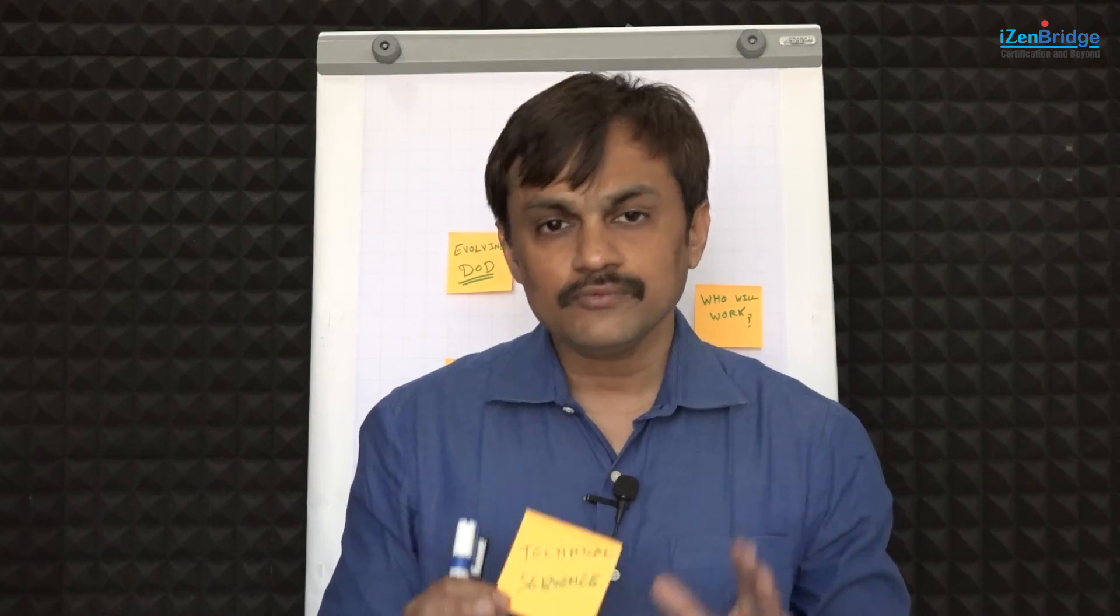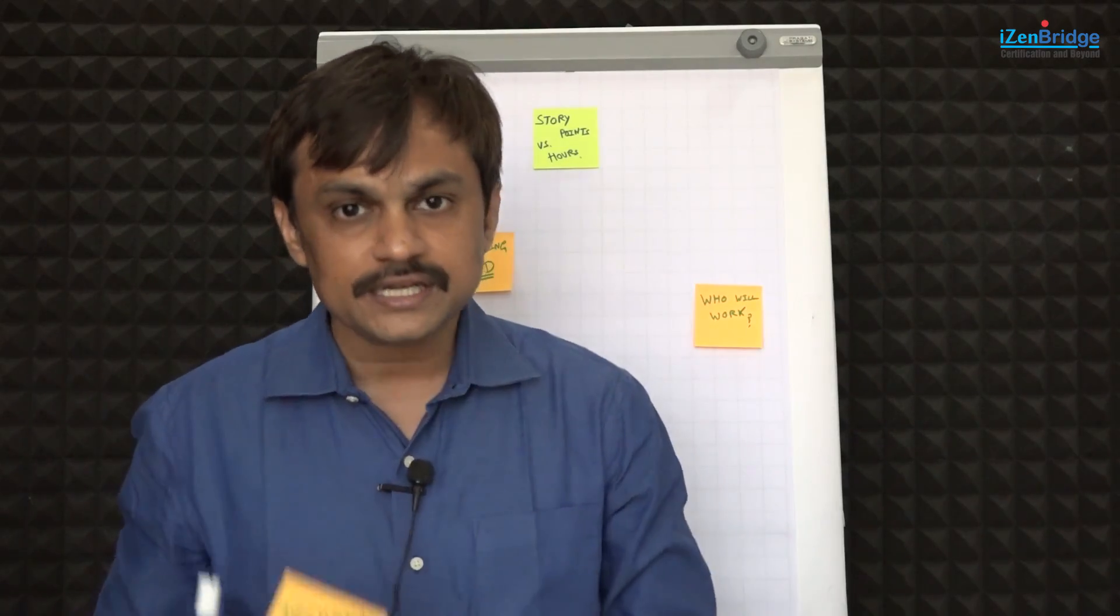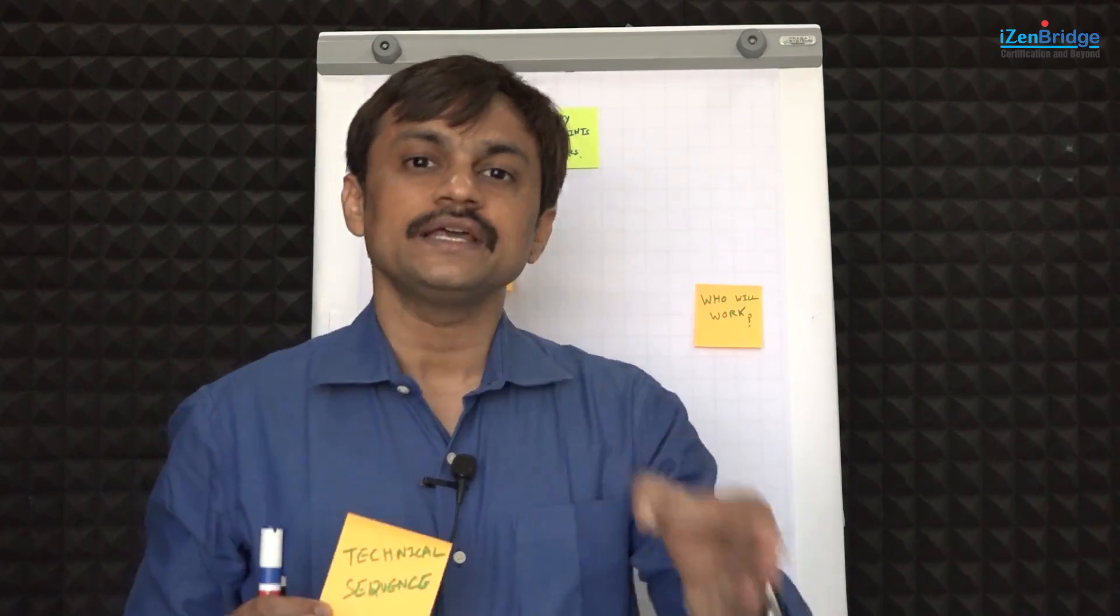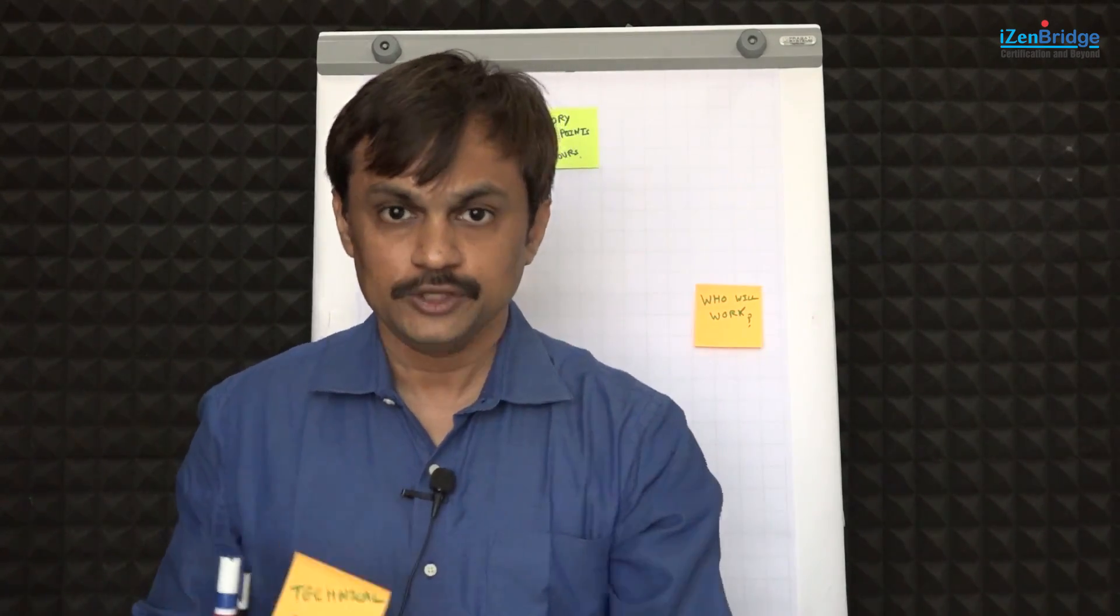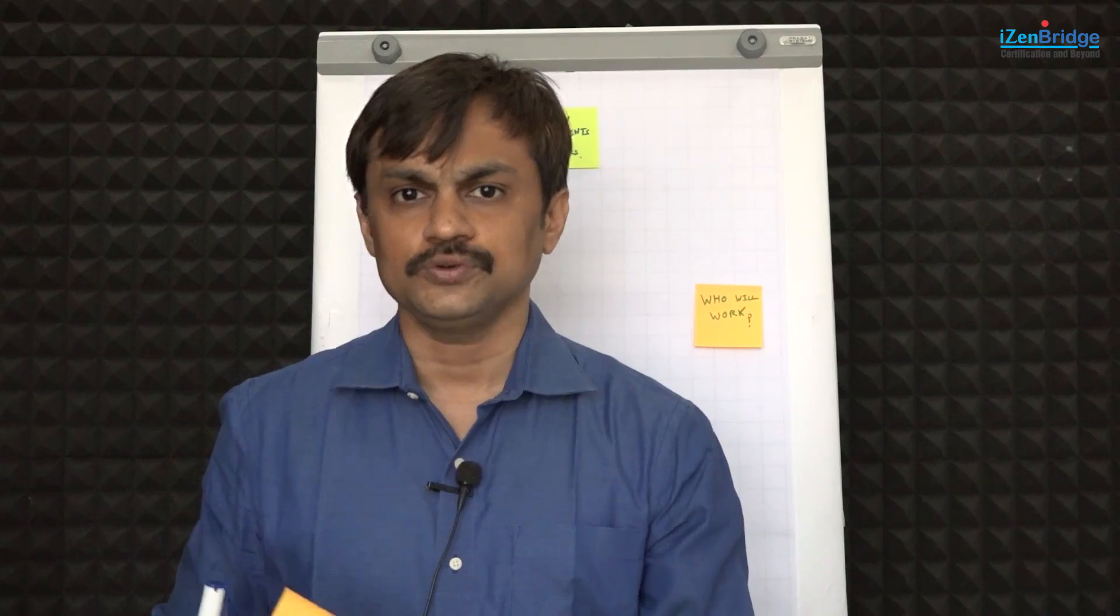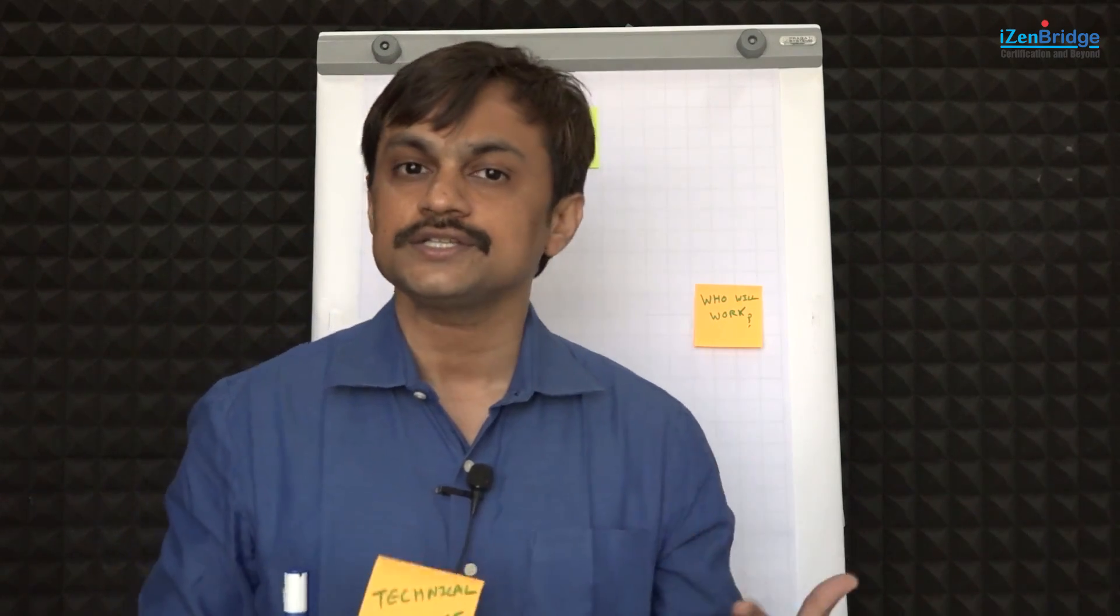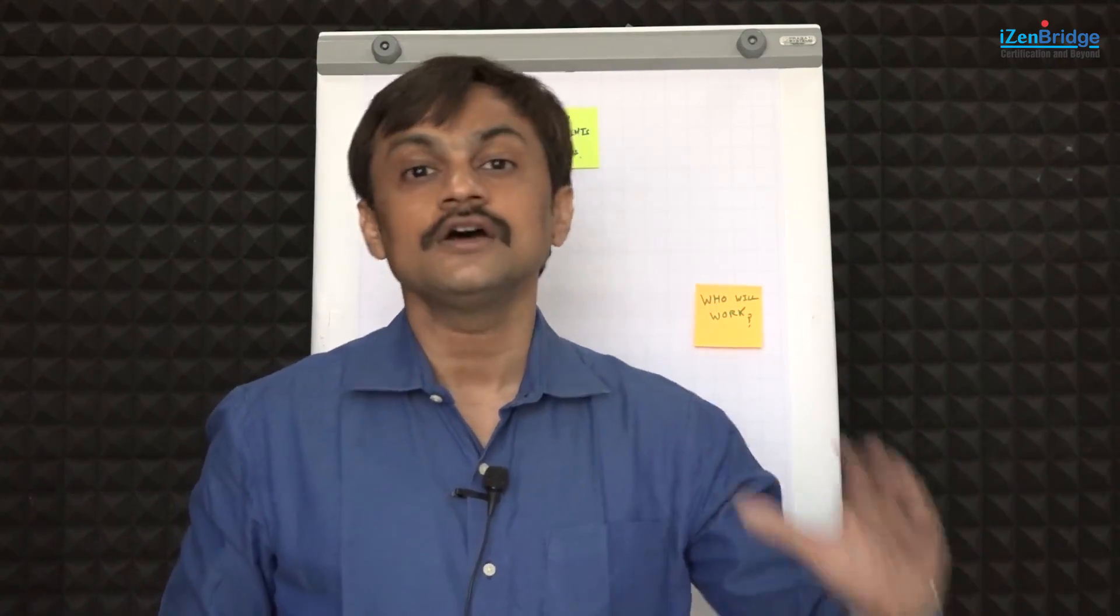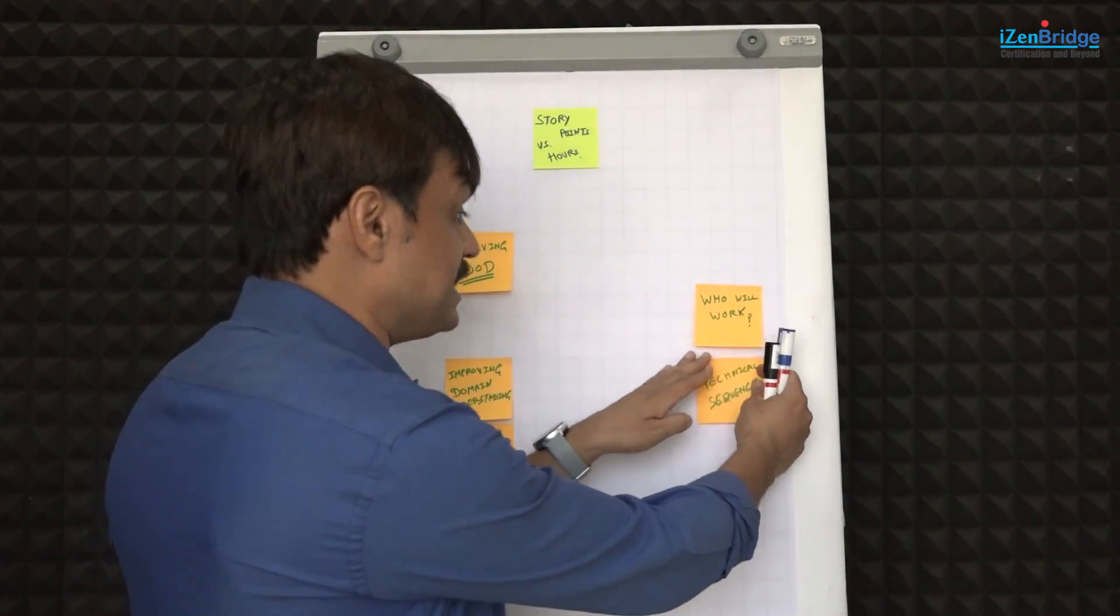When we are doing story point estimation, we're doing it a little bit ahead of the implementation plan. At that point in time, the exact sequence of work is not identified. The real effort consumed in a given user story will be dependent on the sequence. When you're doing sprint planning, you know exactly what you have to do. But when doing story point estimation, you may not have an understanding of when you're going to work on this particular user story. That's why estimating effort is difficult, but estimating the complexity and uncertainty is relatively easier.